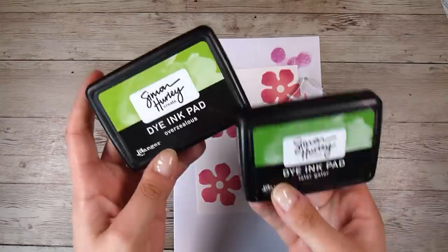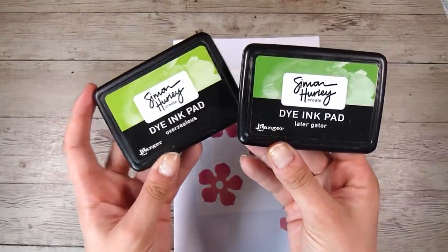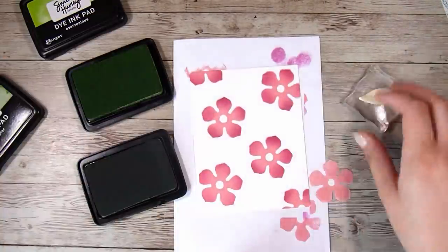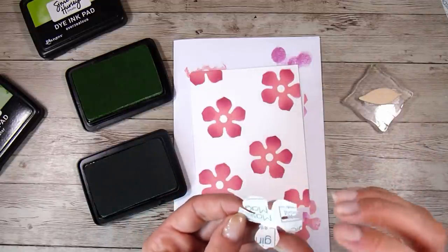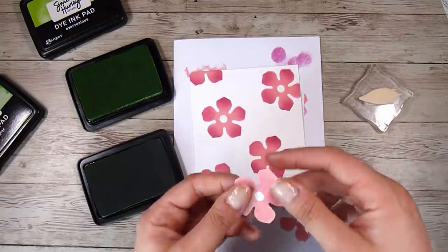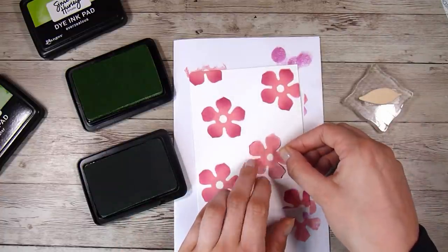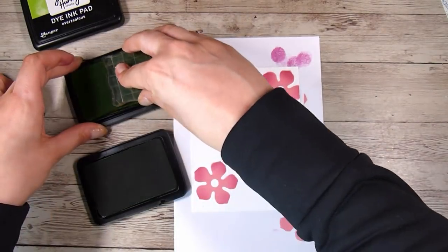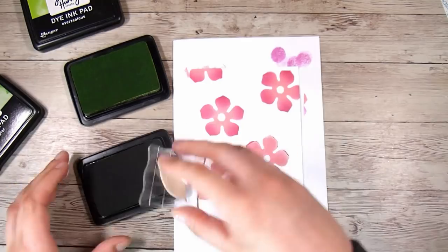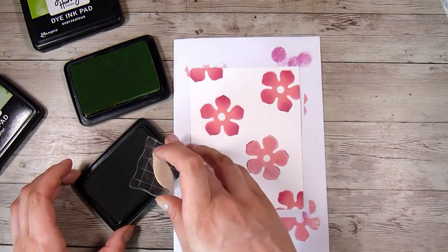Now using a couple more green inks. This is Overzealous and Later Gator by the same Simon Hurley inks. And we are going to use the inside of that mask that we cut out earlier. So we're using both parts of the mask that we cut and we are just going to cover up the flower that we stamped. And then this is how we are going to put in the leaves and it makes it look like the flower is in front of the leaves.